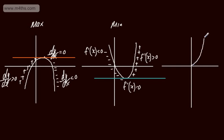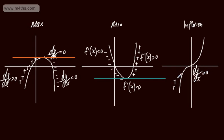Let's now look at the point of inflection, as we saw in the previous video. We have y equals x cubed as a nice example — this is a point of inflection. We have dy by dx equal to zero, then a positive gradient to the left, our zero gradient, and then a positive gradient to the right. So when we have a point of inflection, the sign is going to be the same either side of that stationary point.